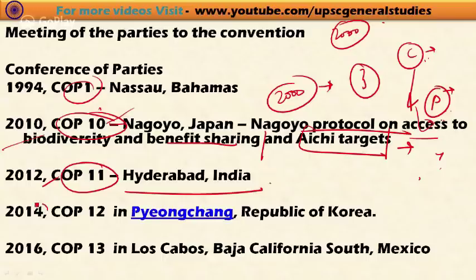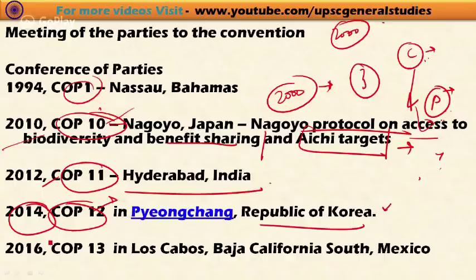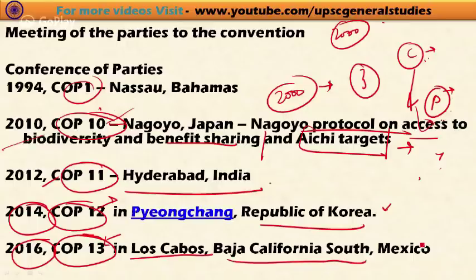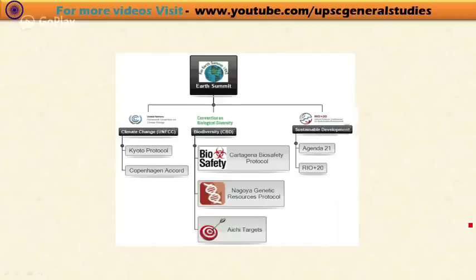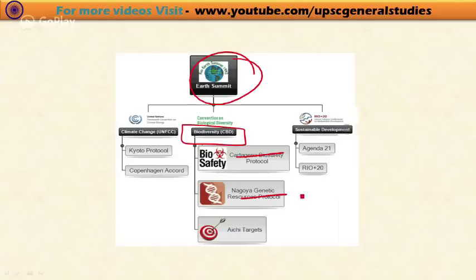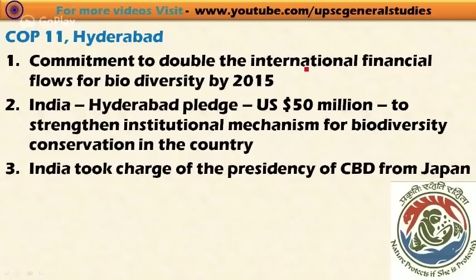COP11 occurred in Hyderabad in 2012. COP12 was held in Pyeongchang, Republic of South Korea in 2014. COP13 was to be held in Los Cabos, Baja California, Mexico in 2016. In summary, the CBD has led to two important protocols — the Cartagena Protocol on Biosafety and the Nagoya Protocol on Access to Genetic Resources and Benefit Sharing — and the Aichi Biodiversity Targets.